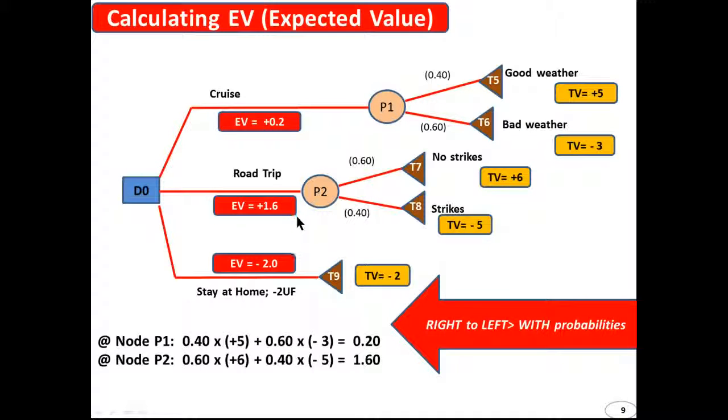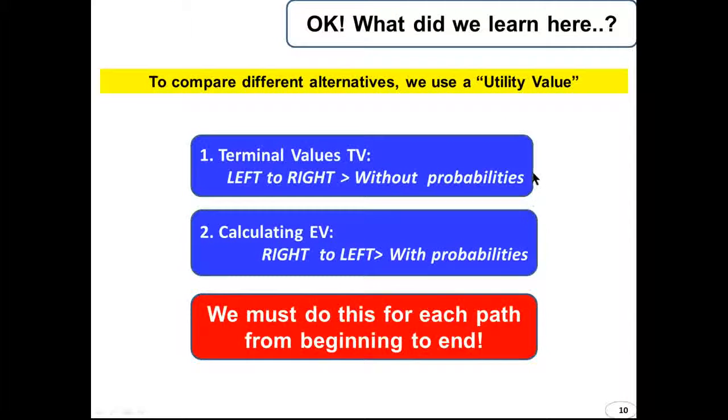We now have our expected values and you can see the diagram shows that the road trip has the highest expected value which is plus 1.6 which should be our decision. So in this case we need to go on the road trip. So what did we do?